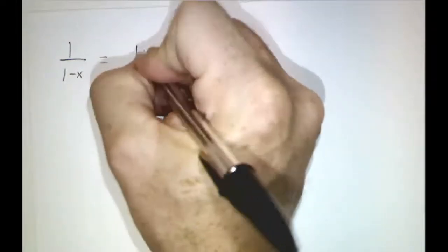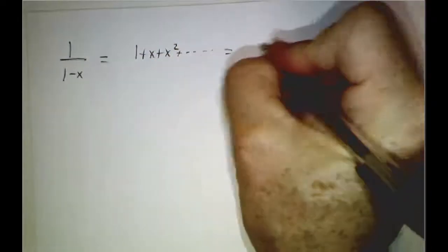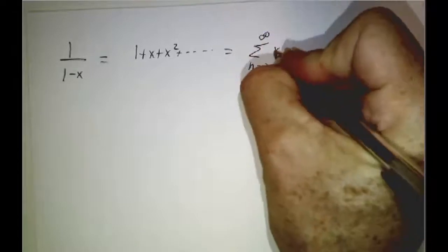There's a different approach which is to start with the formula 1 over 1 minus x is equal to 1 plus x plus x squared and so on down the line. In other words, the sum as n goes from 0 to infinity of x to the n.